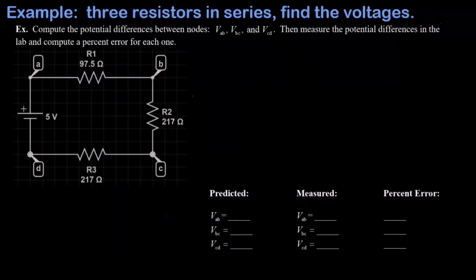In this video we solve a circuit with three resistors in series and we predict the potential differences between three pairs of nodes in the circuit. Then we're going to wire the circuit on the breadboard and measure the potential differences with a multimeter, and finally we compute a percent error on each one of those measurements.